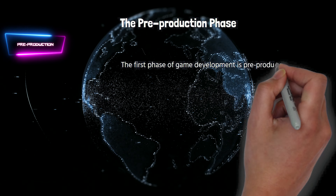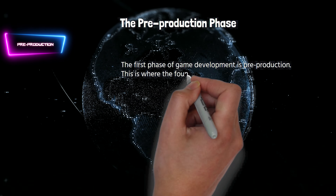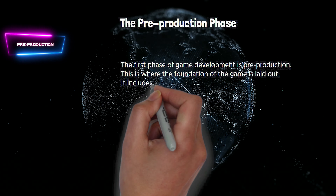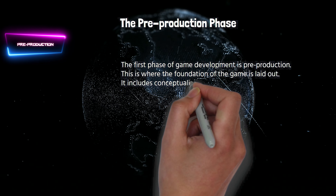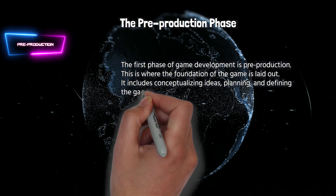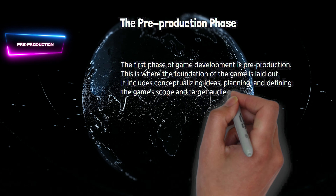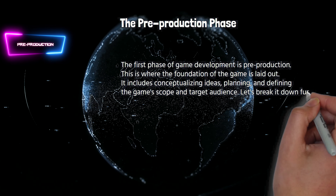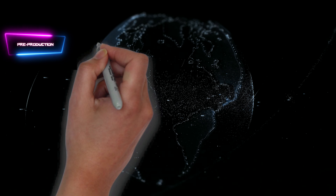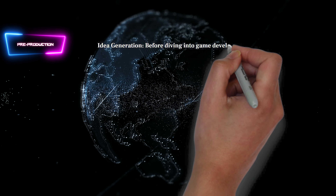Let's start with the first phase: the pre-production phase. The first phase of game development is pre-production. This is where the foundation of the game is laid out. It includes conceptualizing ideas, planning, and defining the game's scope and target audience. Let's break it down further.